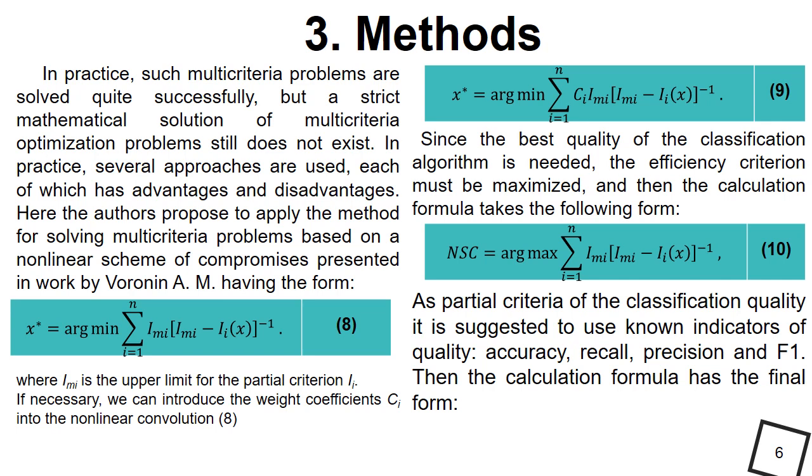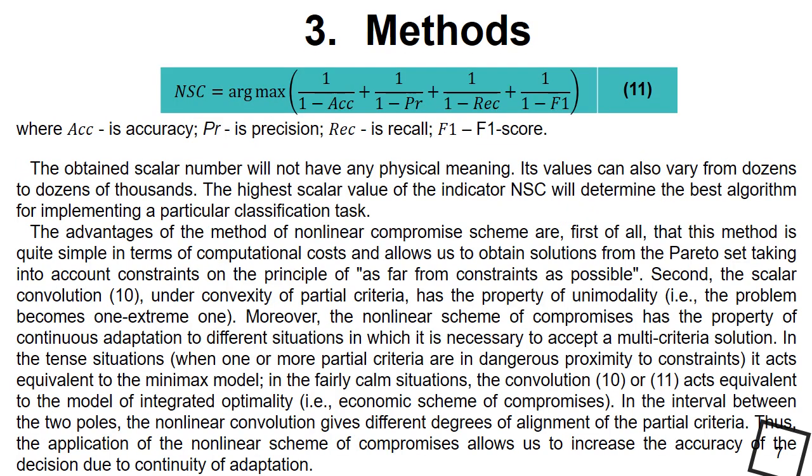In form 8, the introduction of coefficient C_i in equation 9 allows us to give preference to one or other criterion, being better adapted to the specific business task. Since the best quality of the classification algorithm is needed, the efficiency criterion must be maximized, and then the classification formula takes the form 10. The highest scalar value of the indicator NSC will determine the better algorithm for implementation.